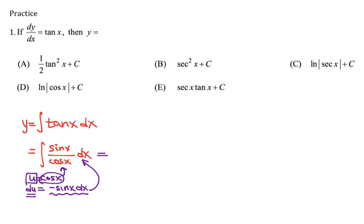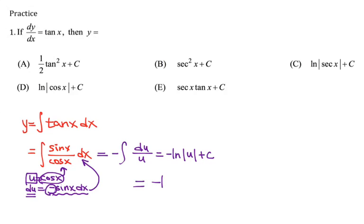In other words, by substitution, we can rewrite this as negative du over u. The integral of 1 over u simply becomes ln. So we have negative ln of absolute value of u plus c. But since we know that u was equal to cosine, then what we end up getting is negative ln of absolute value of cosine of x plus c.